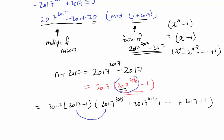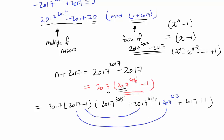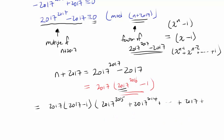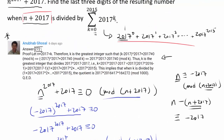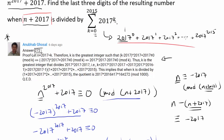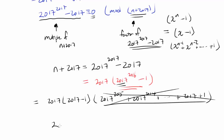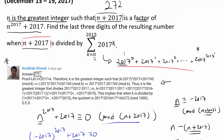One way of seeing that this factorization works is by multiplying it out: we get 2017 to the 2016 power, and the intermediate terms cancel out — 2017 to the 2014 and negative 2017 to the 2014 cancel, and so on — so in the end every term except 2017 to the 2016 power and negative 1 cancels. We then divide this by the summation 1 plus 2017 plus 2017 squared, all the way to 2017 to the 2015 power. We just want to cancel that summation, leaving us with 2017 times 2016.